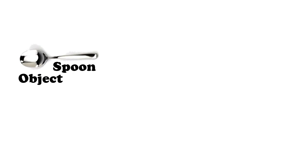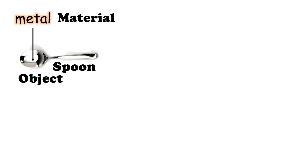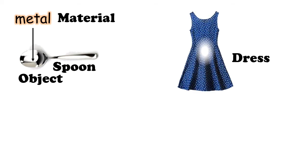Now let us look at other examples. This is a spoon. Spoon is an object. What material makes this object? Metal — very good. Metal is the material, spoon is the object.